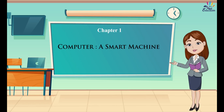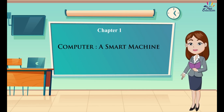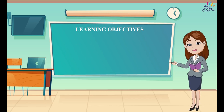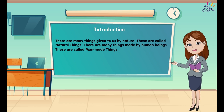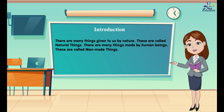Chapter 1: Computer, a Smart Machine. Learning Objectives: Natural Things, Man-Made Things, Machines, Computer Introduction. There are many things given to us by nature — these are called natural things. There are many things made by human beings — these are called man-made things.